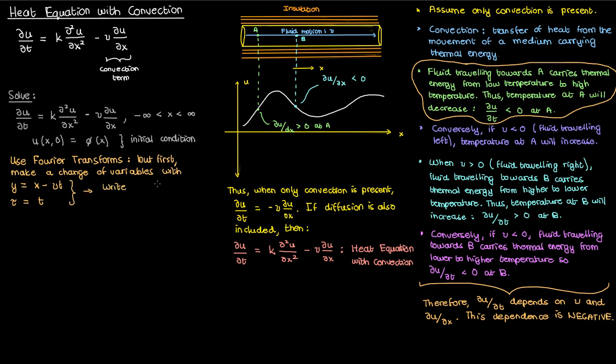We let y equal to x minus vt and we create another variable tau that's equal to just t. Now in order to implement this change of variables we need to take the second partial of u in x and the first partial of u in t and write those in terms of the partial u partial y and partial u partial tau. So the partial of u with respect to the new variables.